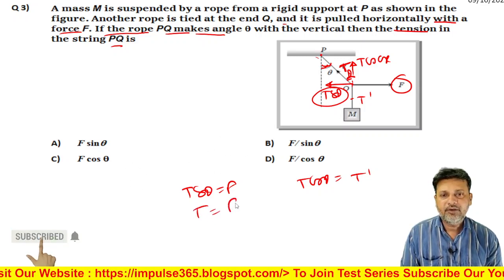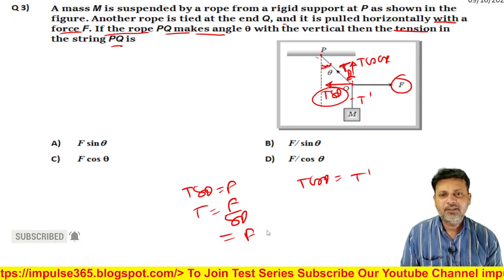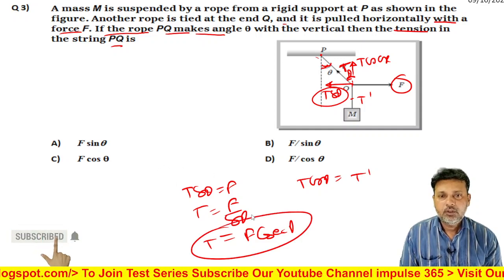And everything in the options is given in terms of F. So T equals F by sin theta. You can also write this as F by sin theta, whichever option is correct, check. F by sin theta.